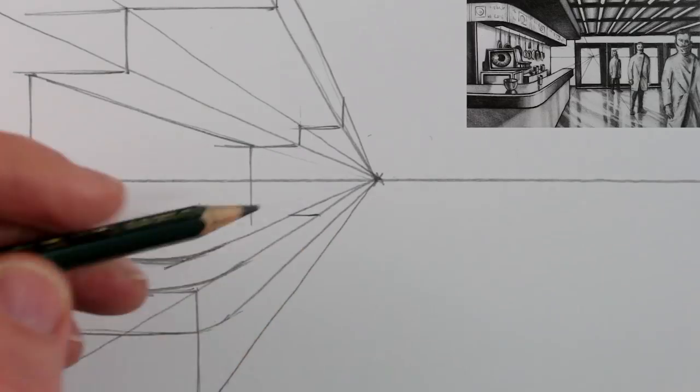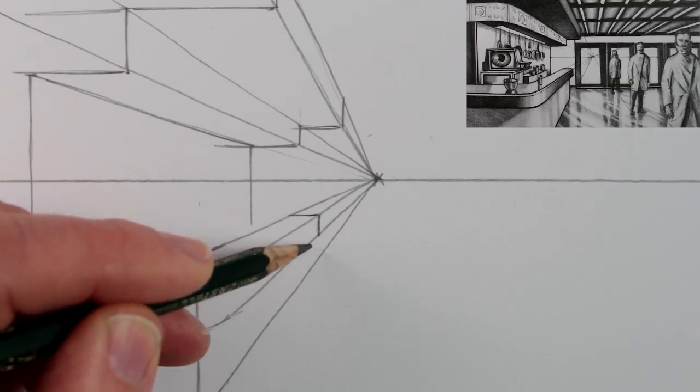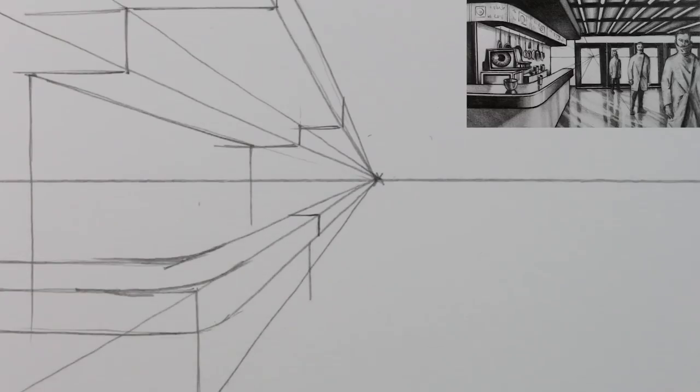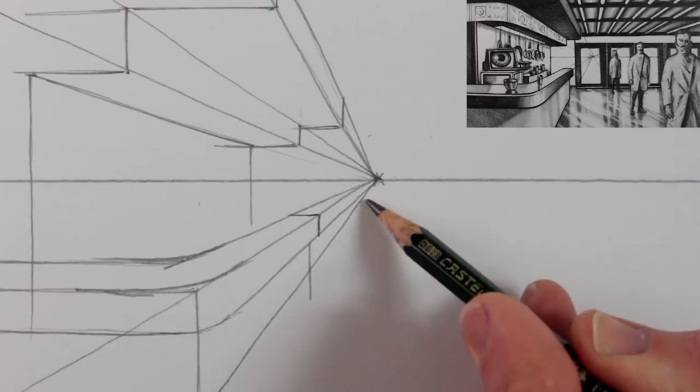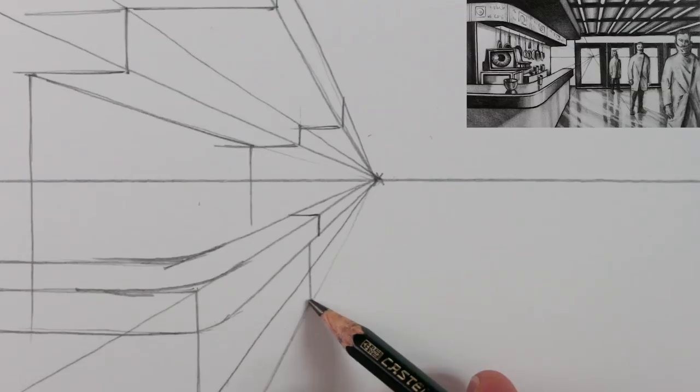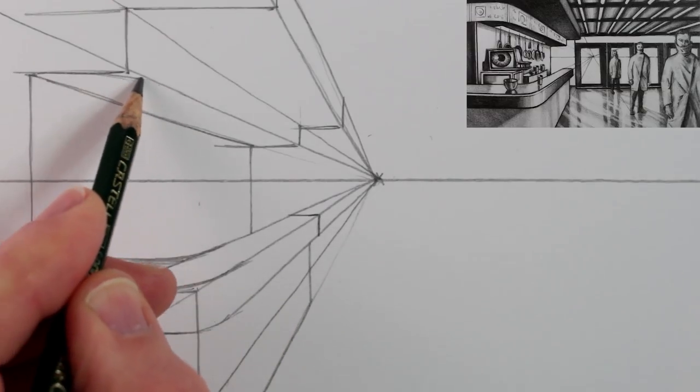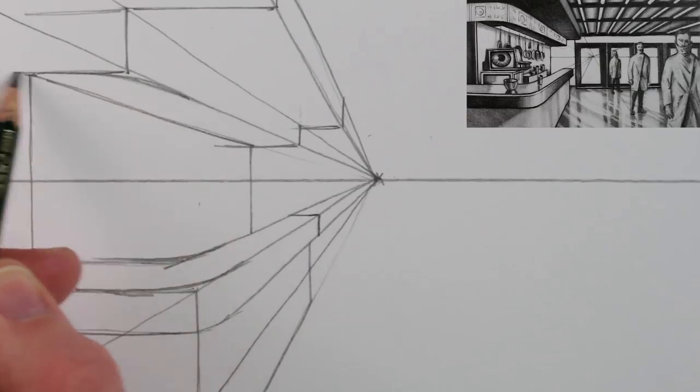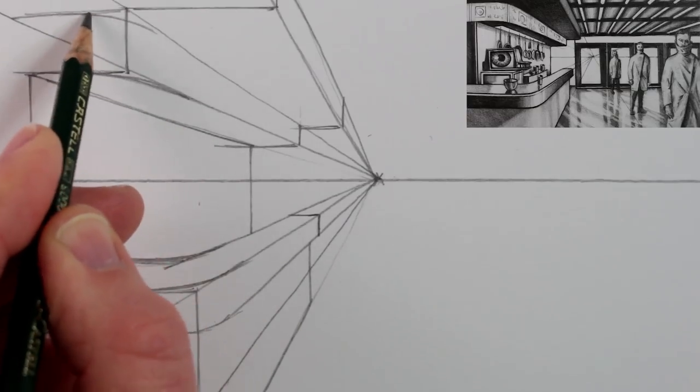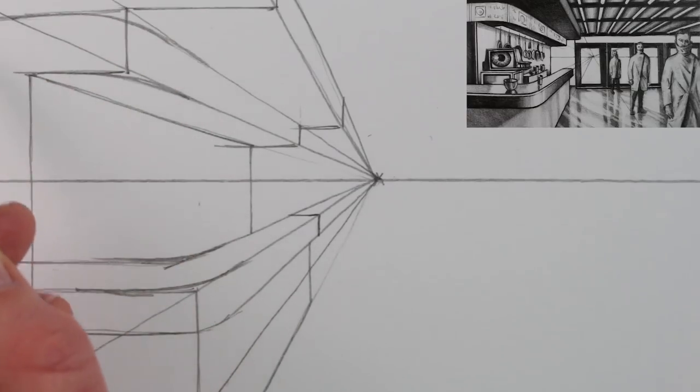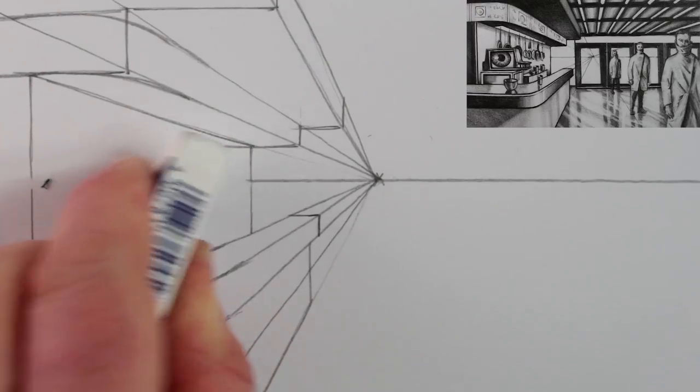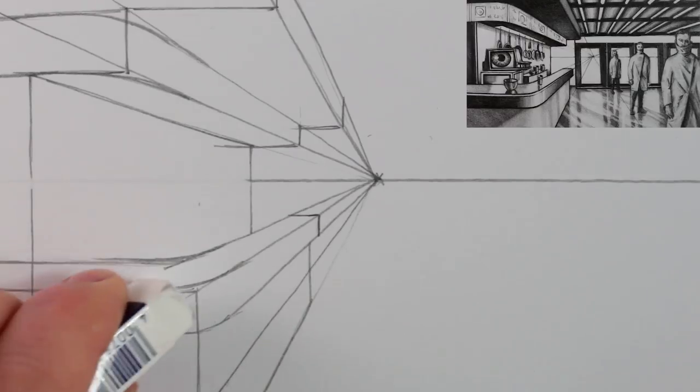Now we can draw a line to show where the bar stops. I think I'll add a line to extend the height of the bar. Again all these diagonal lines go to our one vanishing point. We can make a curve at the top here too. Next we can erase some of the lines that we no longer need, so that we can see what we already have.